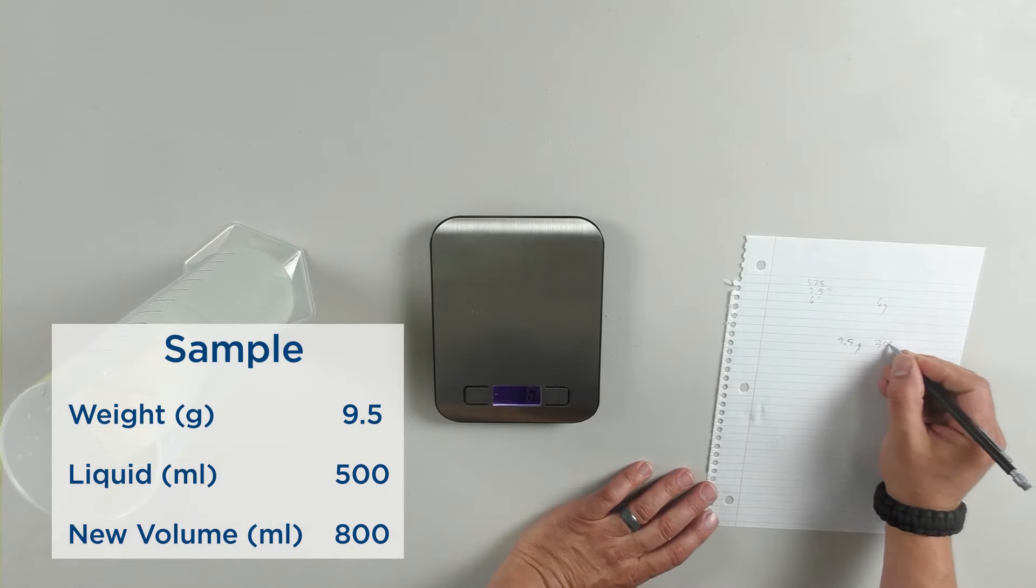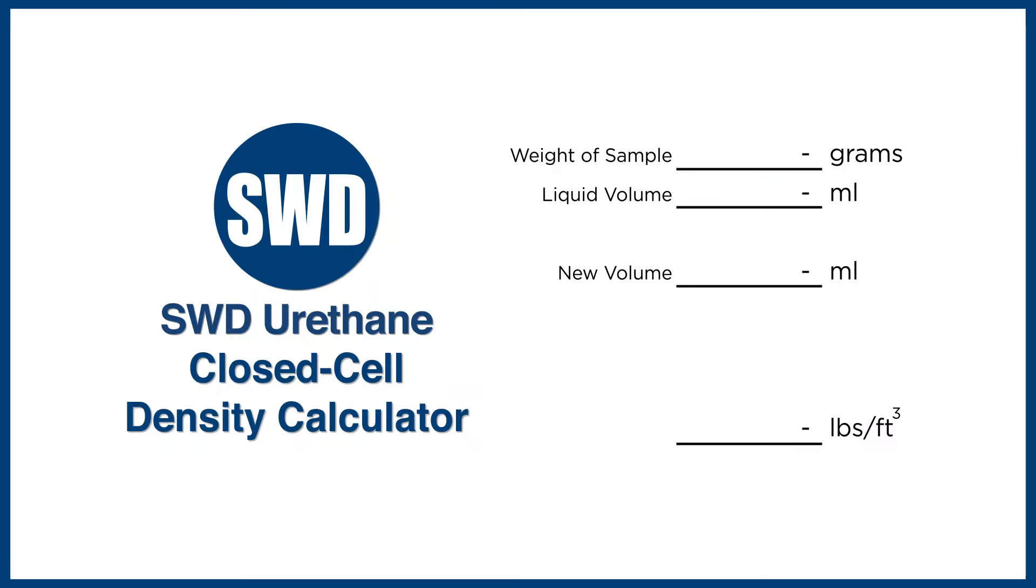Once you've gathered all your measurements, you can open up the density calculator included in your SWD density kit and input the measurements gathered. Our measurements were as follows: the weight was 9.5 grams, the original volume was 500 milliliters, and the new volume is 800 milliliters. Once you input all these measurements into your calculator, you should come up with a value. Our value is 1.98 pounds per cubic foot for our sample.